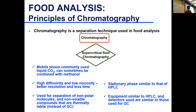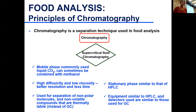The equipment is similar to HPLC — you have pumps, a column, and a detector. However, the detector is similar to those used in gas chromatography. The stationary phase is similar to HPLC, detectors similar to GC, and the mobile phase is unique: liquid CO2.